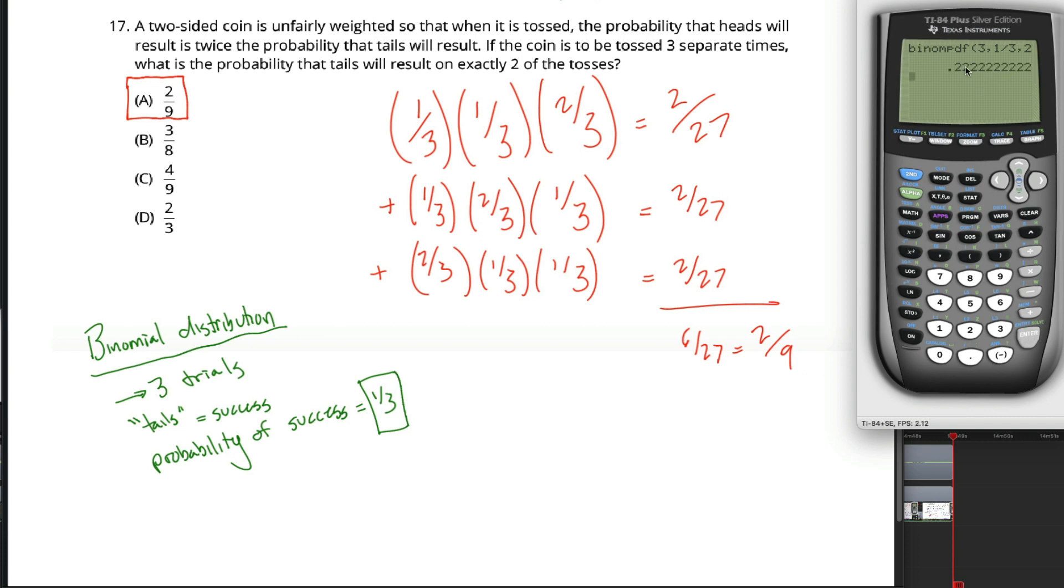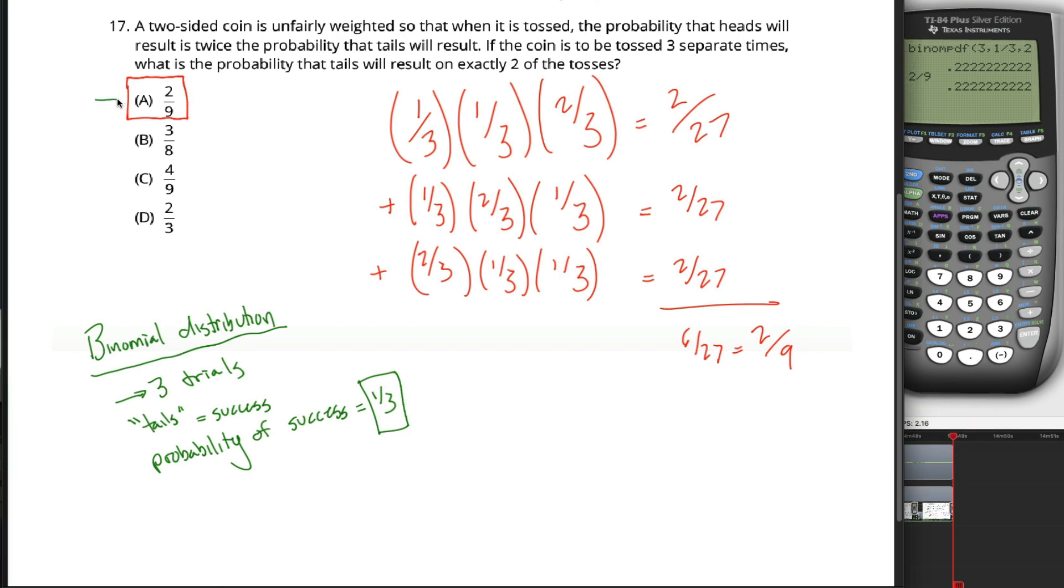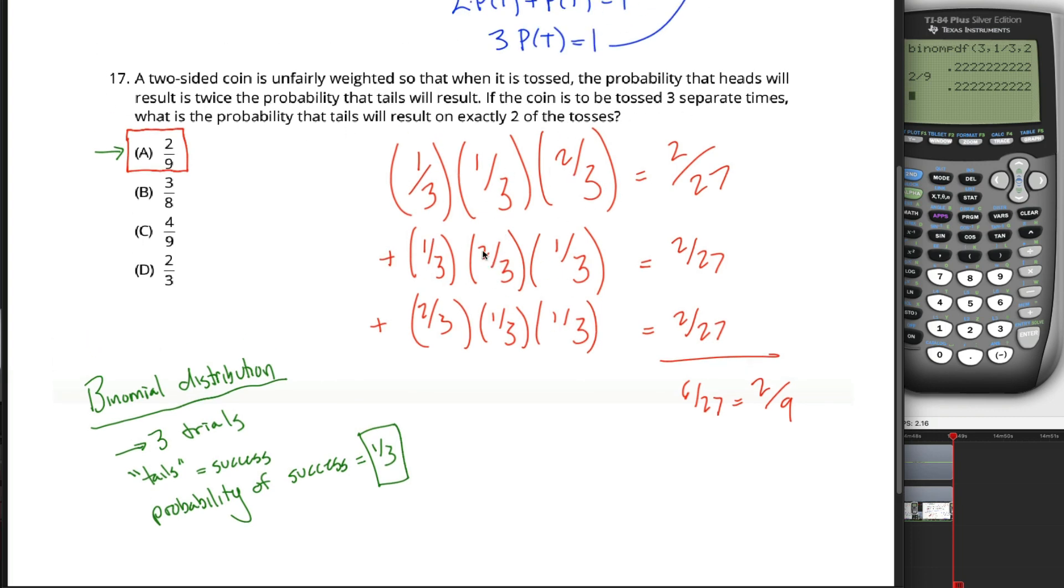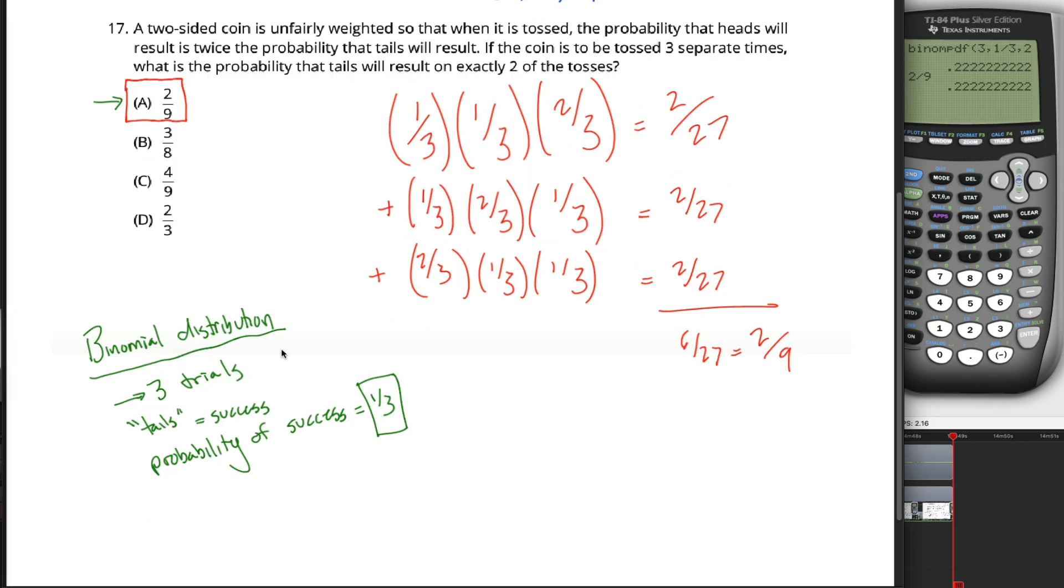It'll calculate for me 0.2 repeating, which is the same as two ninths. In case you don't believe me, there's two ninths. We can use this calculator function to get the same answer that we got before. The advantage of the calculator function is if we had more than three trials, it might be really tedious to list out all the different combinations. I suspect if this showed up on your test, it would look kind of like you see in 17 here, where we'd have a reasonable amount of trials, and you'd be able to solve it either way. So I suspect you can do this problem either of the two ways I demonstrated.